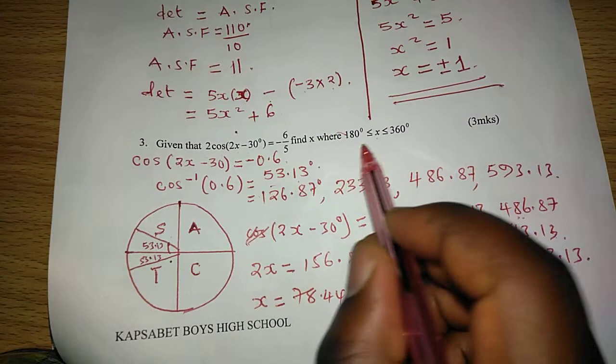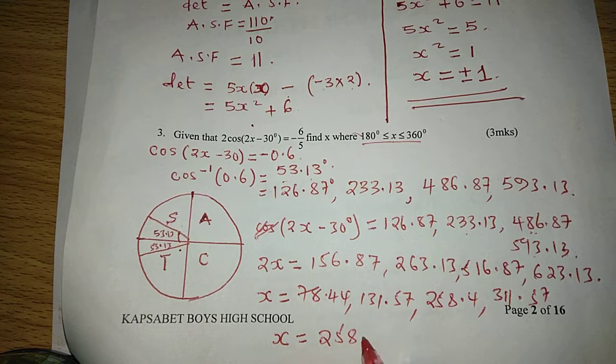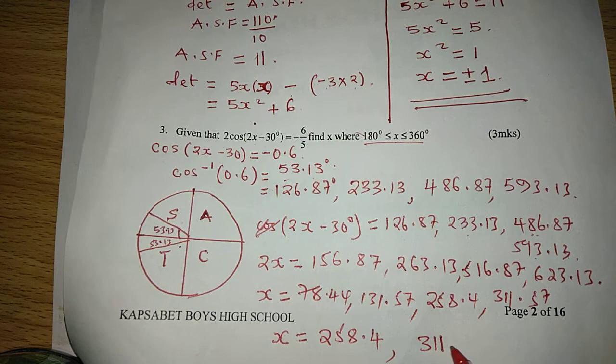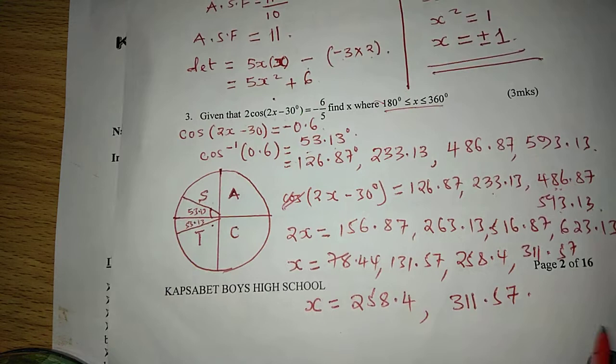So now, the angle should range between 180 and 360. So x will be equal to 258.4 and 311.57. Because when you go for another cycle now, we will go beyond 360, and it is the upper limit. So that is how we get the answers, or the values of x.